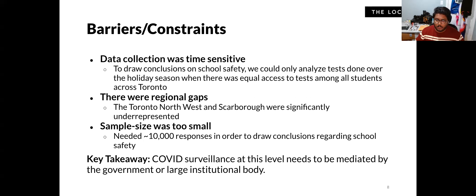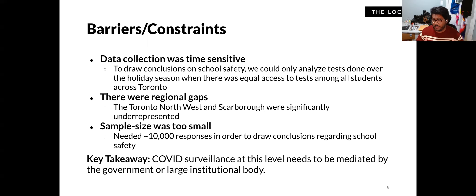Data collection was really time-sensitive, largely due to access to tests. We put those constraints in place to ensure an equitable and representative sample, but as we moved further from the winter period, the test results being reported became less and less useful. There were also regional gaps — Toronto's northwest and Scarborough, both areas unduly impacted by the pandemic, were underrepresented, which was especially concerning since representative data there was doubly important.